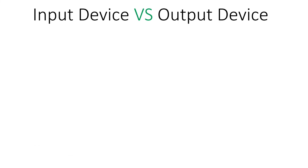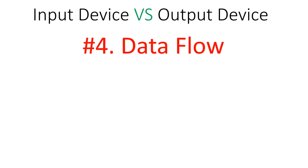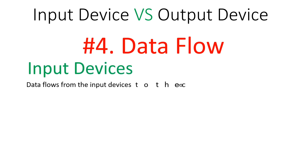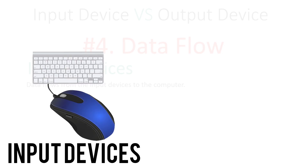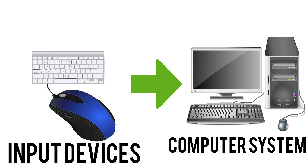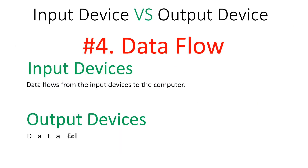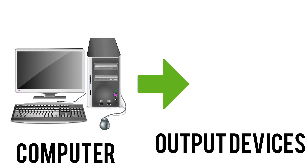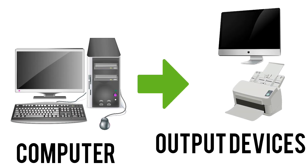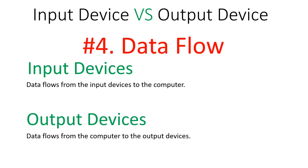Regarding data flow, in the case of input devices, data flows from the input device to the computer for further processing. In the case of output devices, data flows from the computer to the output devices — the processed data is transferred to the display unit or other output devices.